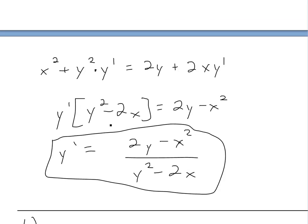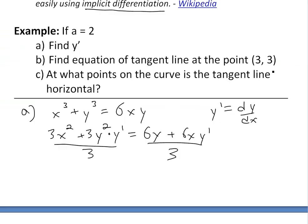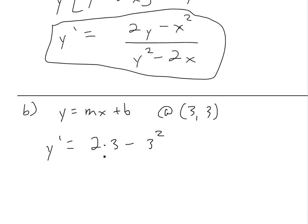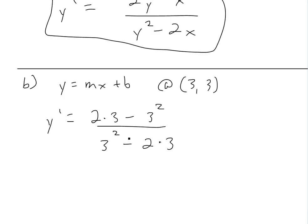So now if we look at part b, which states find the equation of the tangent line at point (3, 3): we know the equation of a tangent line is y equals mx plus b, and m is the slope at (3, 3). So we just plug in x=3, y=3: y prime equals (2 times 3 minus 3 squared) all divided by (3 squared minus 2 times 3). As you can see, this is the exact same thing in numerator and denominator except with opposite signs, so it should be negative 1. We can double-check: 6 minus 9 is negative 3, and 9 minus 6 is 3, so negative 3 over 3 gives us negative 1. So m equals negative 1.